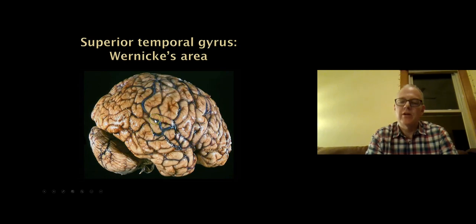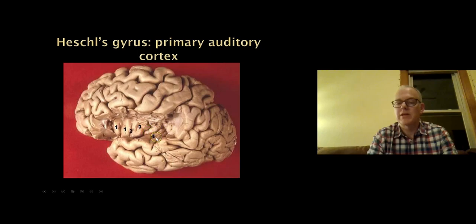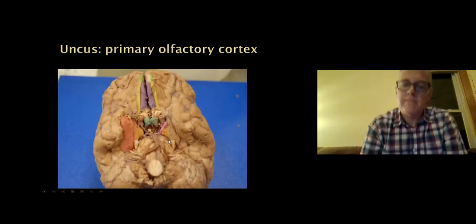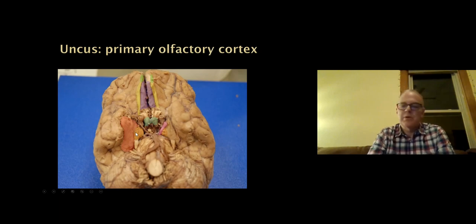On the temporal lobe we have Wernicke's area, the receptive language area. It extends a little into the parietal lobe, but its most important function is on the superior temporal gyrus. Deep to that is Heschl's gyrus — if you put your fingers in the sylvian fissure, they rest there. This is primary auditory cortex, right next to Wernicke's area. You hear the sound, and then the interpretive language area — Wernicke's — is immediately adjacent. On the undersurface of the brain, the uncus is primary olfactory cortex. Adjacent to it, the parahippocampal gyrus has a very important function for memory and is part of the limbic system.